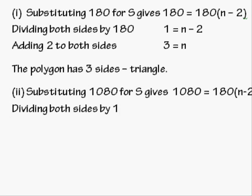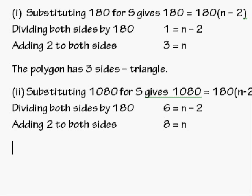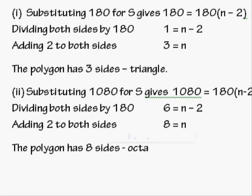Divide by 180, then adding 2. The polygon has 8 sides, so therefore it is an octagon.